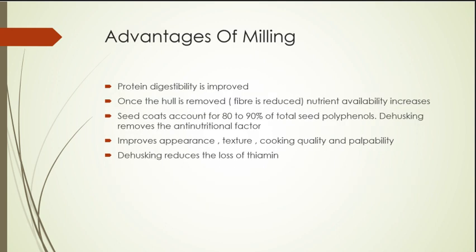The advantages of milling: protein digestibility is improved and net protein utilization of dal is higher than that of whole seeds. Removal of the hull facilitates reduction of fiber and nutrient availability is increased. Seed coats account for 80 to 90 percent of the total seed polyphenols — de-husking removes this anti-nutritional factor. This improves appearance, texture, cooking quality, palatability, and keeping quality. The germ can also be removed with the skin, resulting in less loss of thiamine.